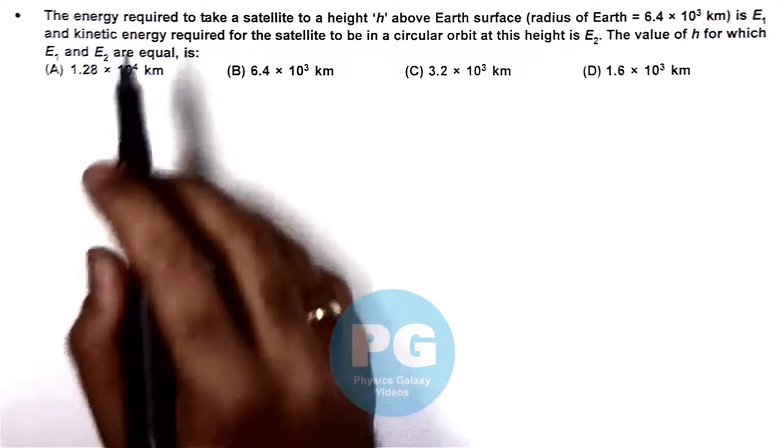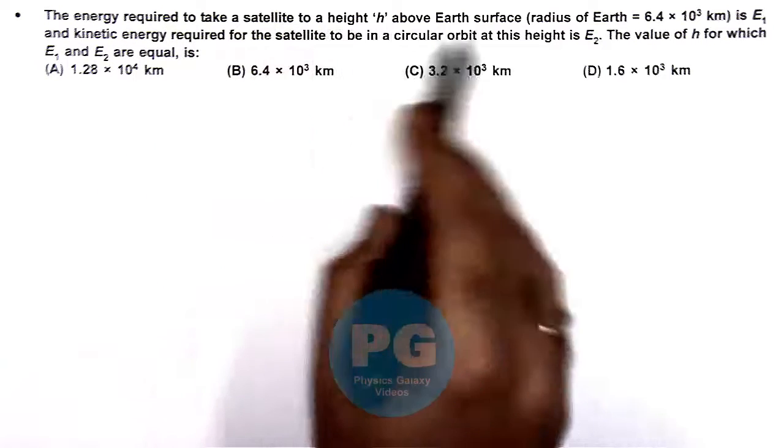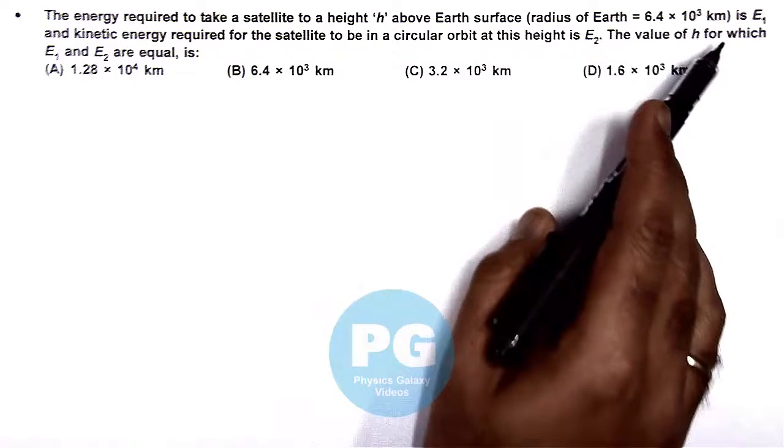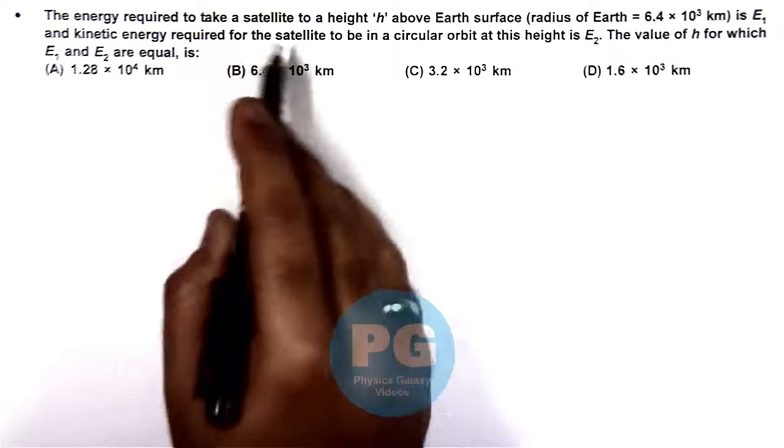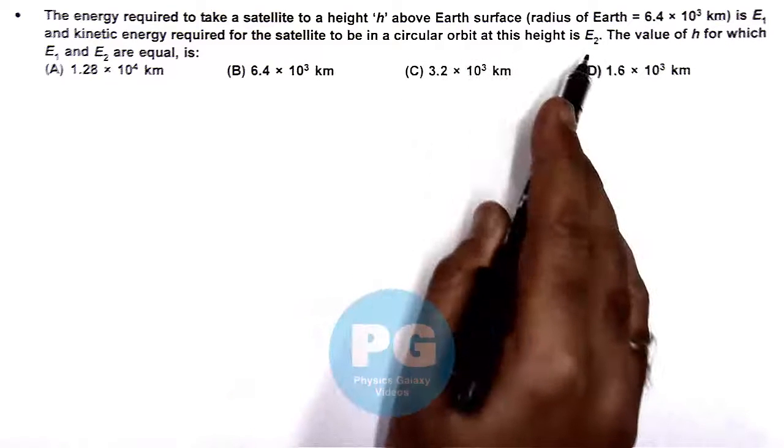In this question, the energy required to take a satellite to a height H above Earth's surface is E1, and kinetic energy required for the satellite to be in a circular orbit at this height is E2.